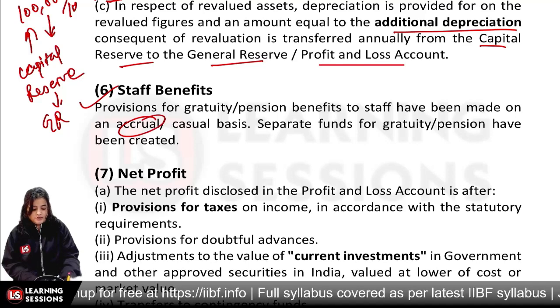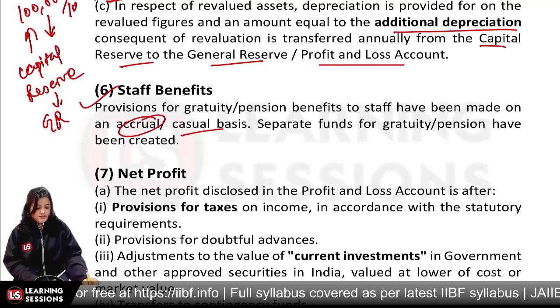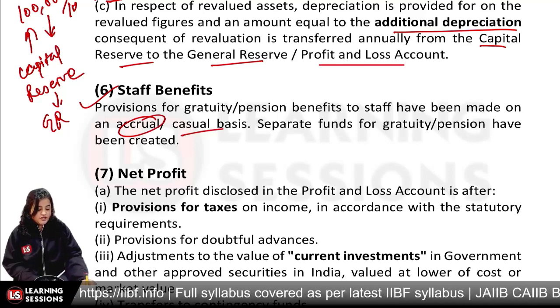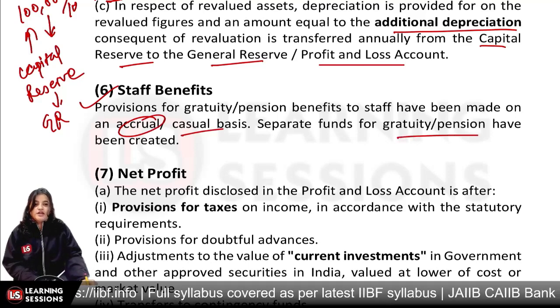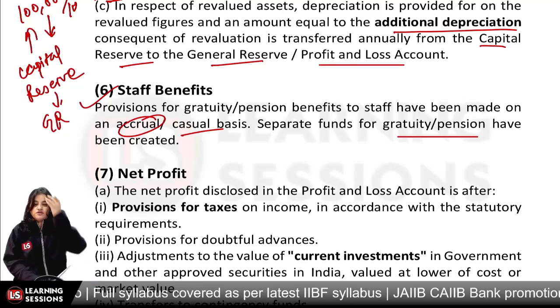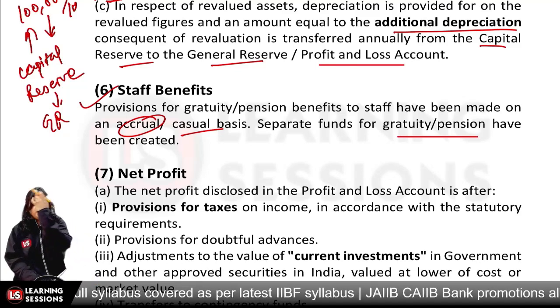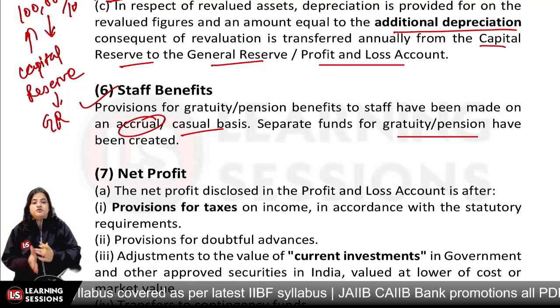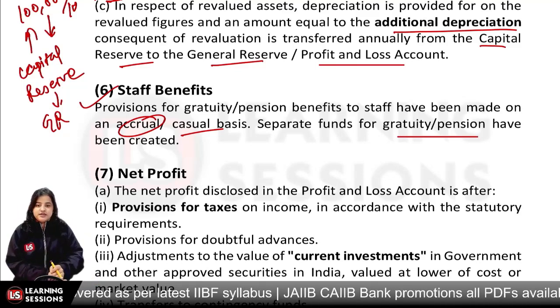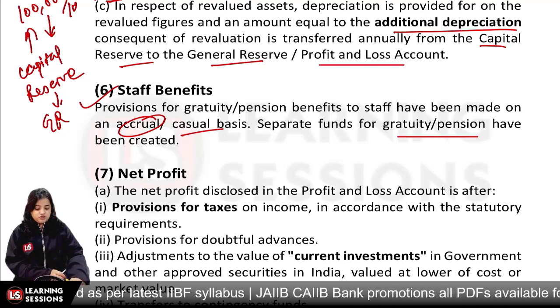Then we have staff benefits. We make provisions on an accrual basis. We also disclose that we have created a fund for gratuity, and we show the movement of the gratuity fund — so we give that disclosure.